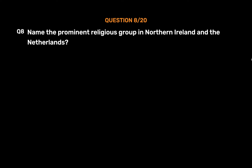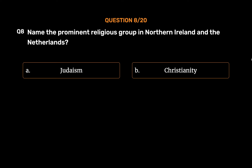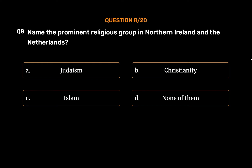Question number 8. Name the prominent religious group in Northern Ireland and the Netherlands. Option A: Judaism. Option B: Christianity. Option C: Islam. Option D: None of them.